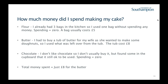For the butter, my wife wanted to make some donuts so she asked me to get her a tub of butter. There was some left over, so I used that for my cake. That tub cost me £8. Finally, for chocolate — I'm not a big chocolate fan, so I don't usually buy it, but somebody gave me some for Christmas and I was able to use that, so that didn't cost me any money either.